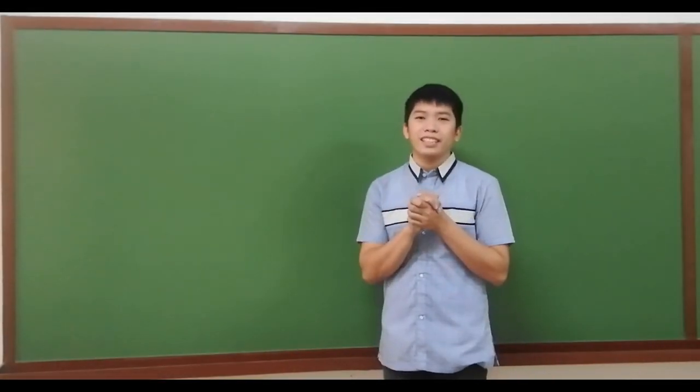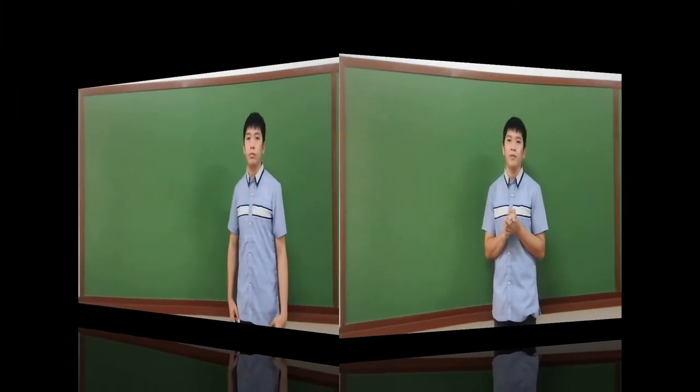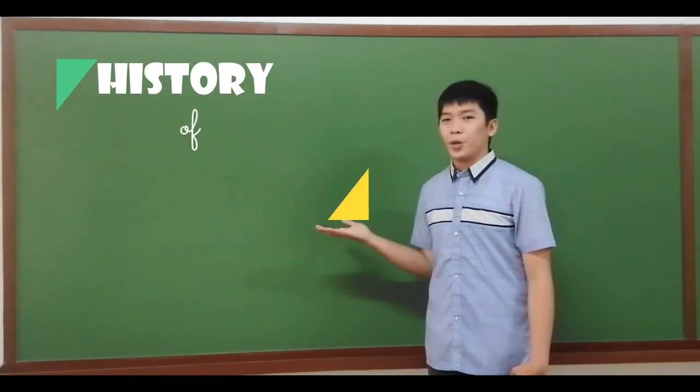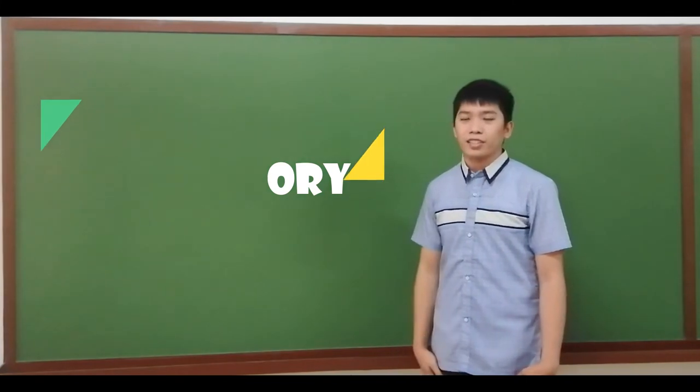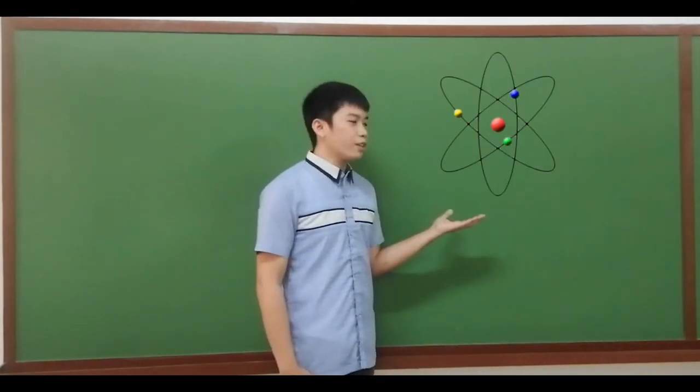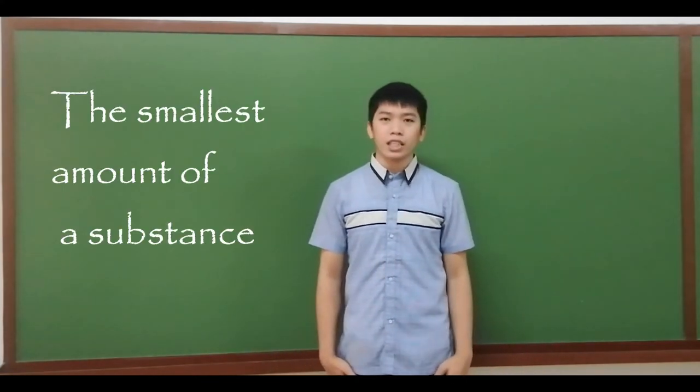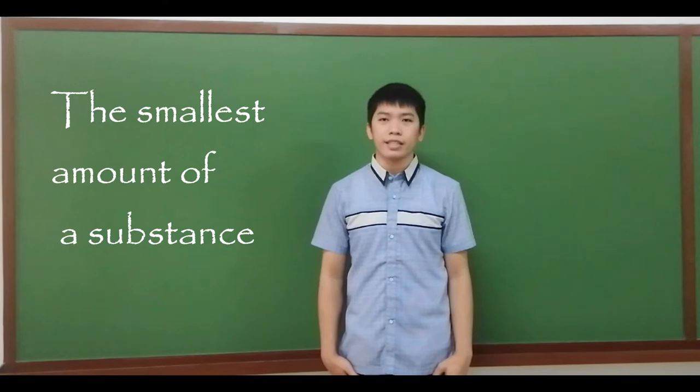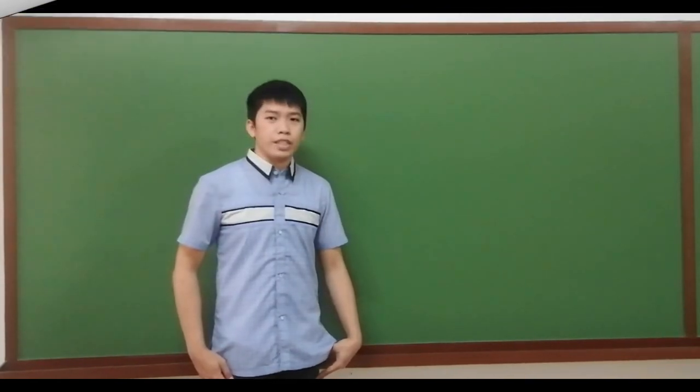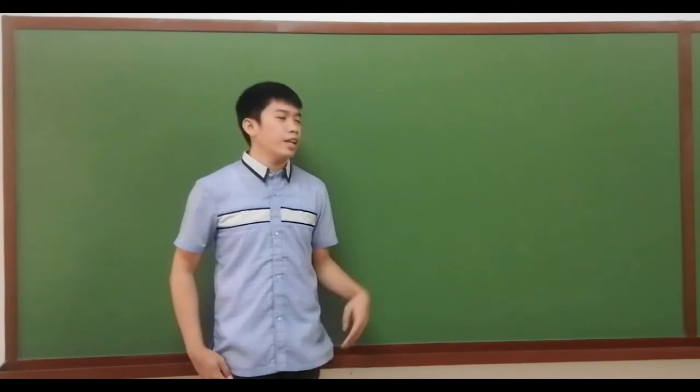Alright, that ends our activity. Congratulations for a job well done! Now, let us discuss the history of atomic theory. Let us start with the history of atoms. As defined earlier, atom is the smallest particle of an element. It is also the smallest amount of a substance that can take part in any chemical reaction. The first person who began to search for a description of matter was the great philosopher named Democritus.